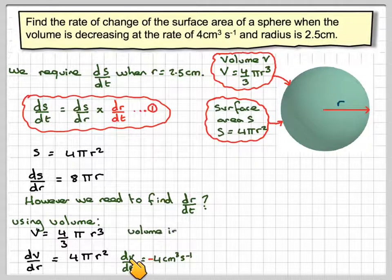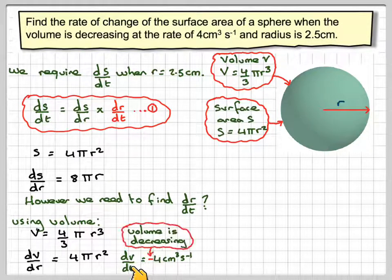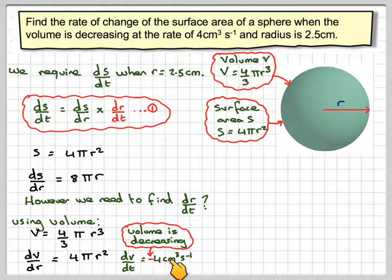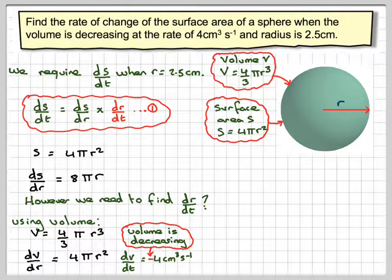We also know that dv/dt, the rate of change of the volume, is decreasing. So it's minus 4 cm³ per second because the volume is decreasing.